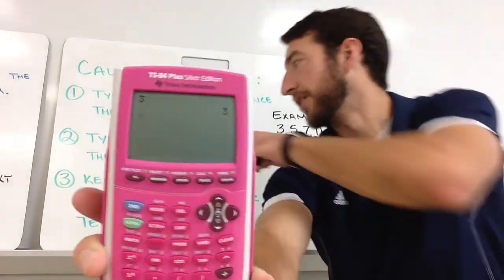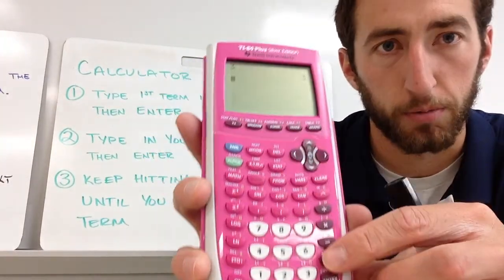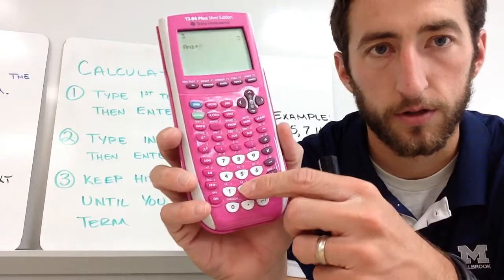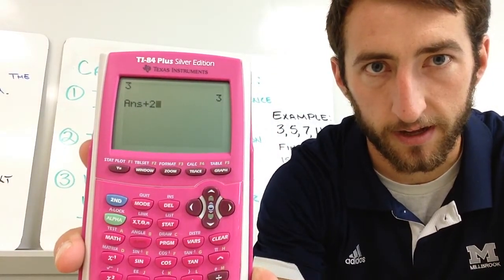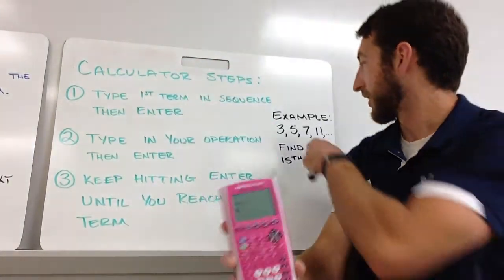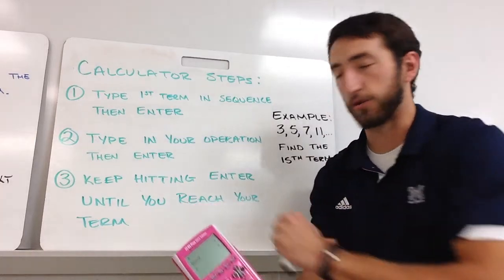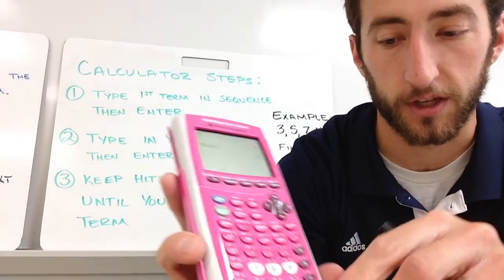Then I'm going to type in my operation. We said we're going to add 2, so plus 2. It has that ANS in there. You hit enter. That's going to give you your next term, so I got my 5. I want to find the 15th, so I'm going to keep hitting enter until you reach your final term. I'm just going to keep hitting enter.